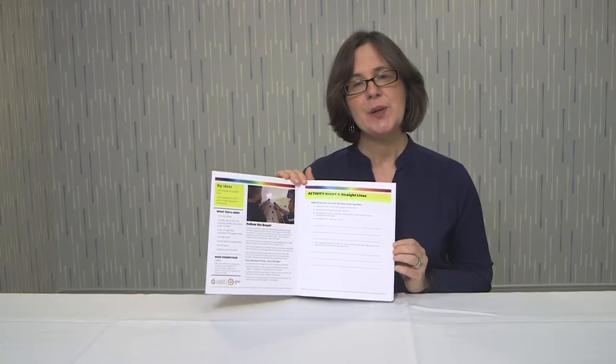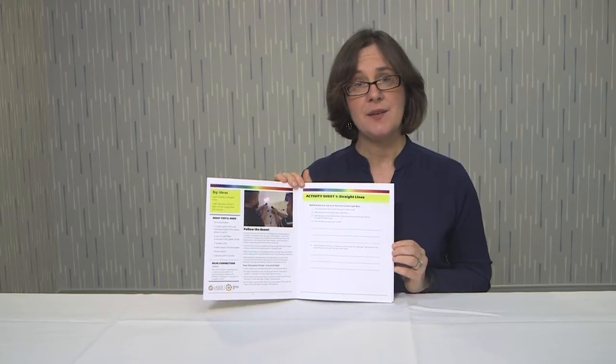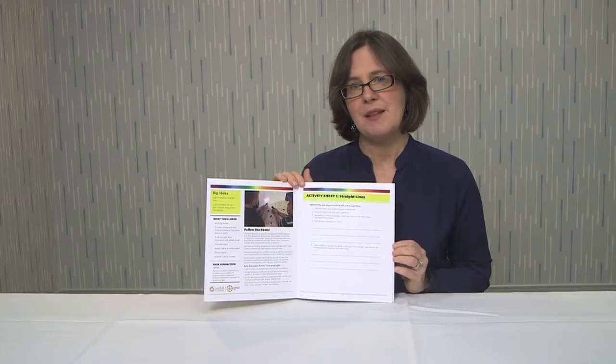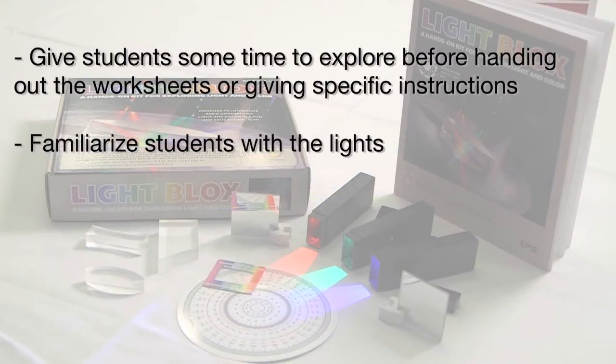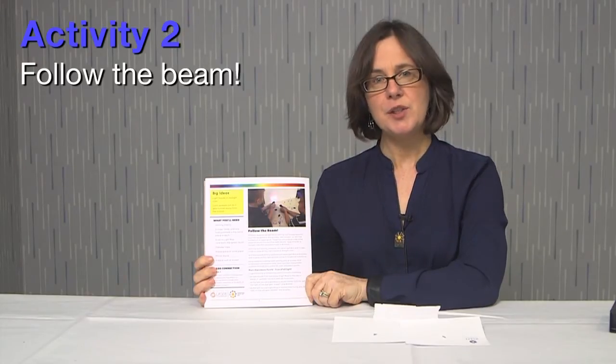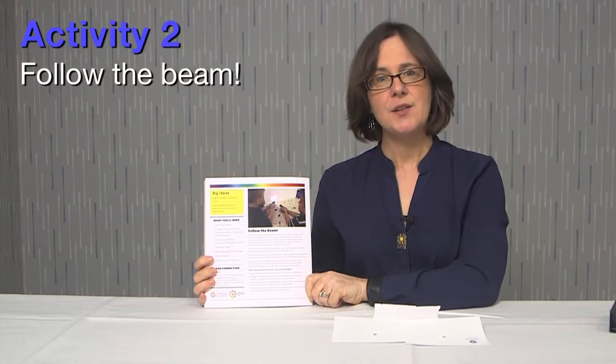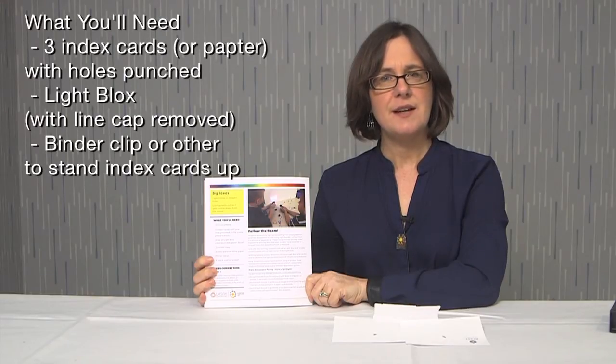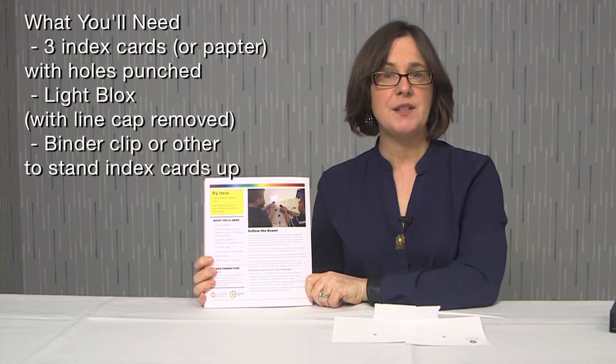Now in Activity 2, we're going to take out the Light Blocks and see how they work. We're also going to introduce the concept that light is something that travels. Mostly, kids experience light as something that's either there or not there, and these activities are going to give kids a feel for the fact that light travels in straight lines.